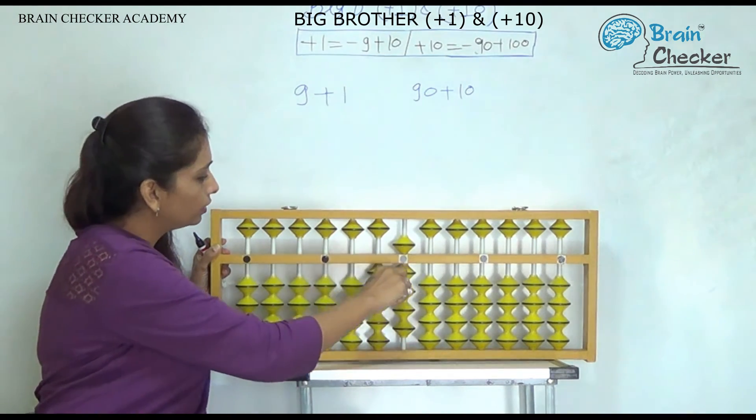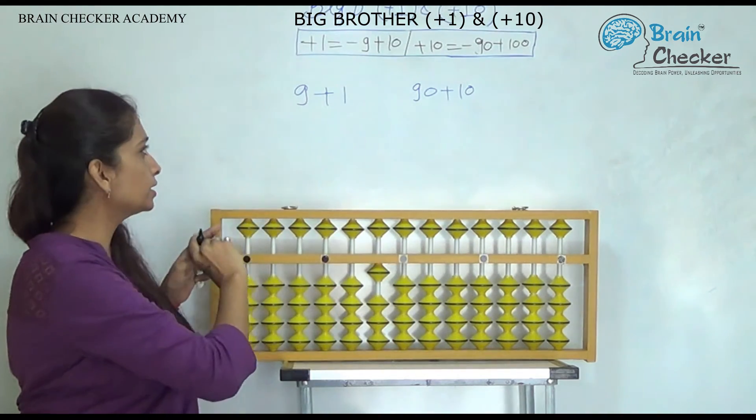what is the formula? Add 10 less 9. So the answer is 10.